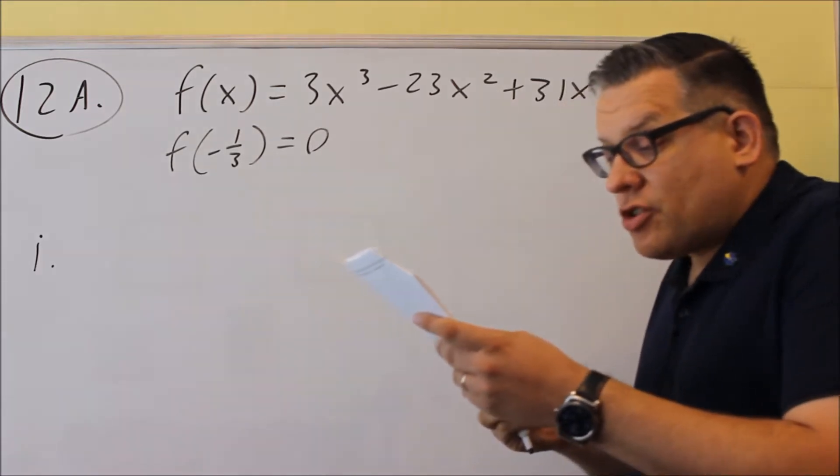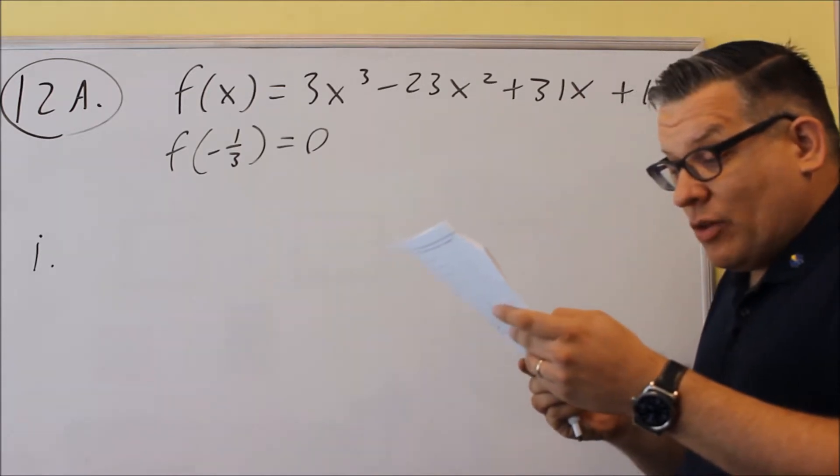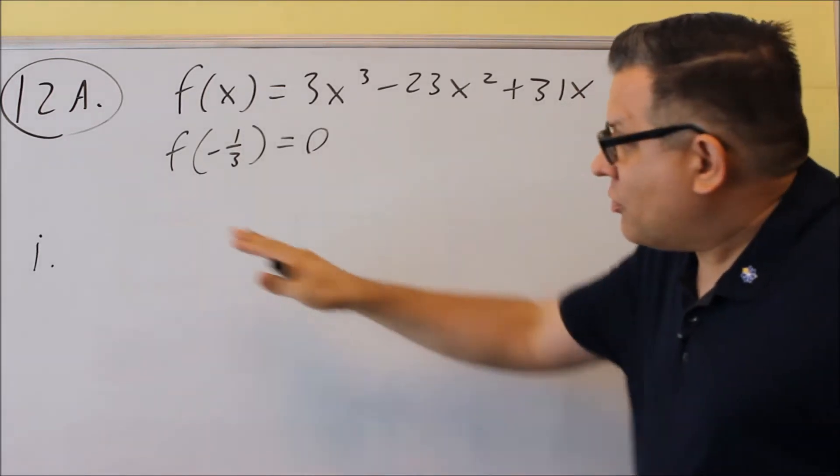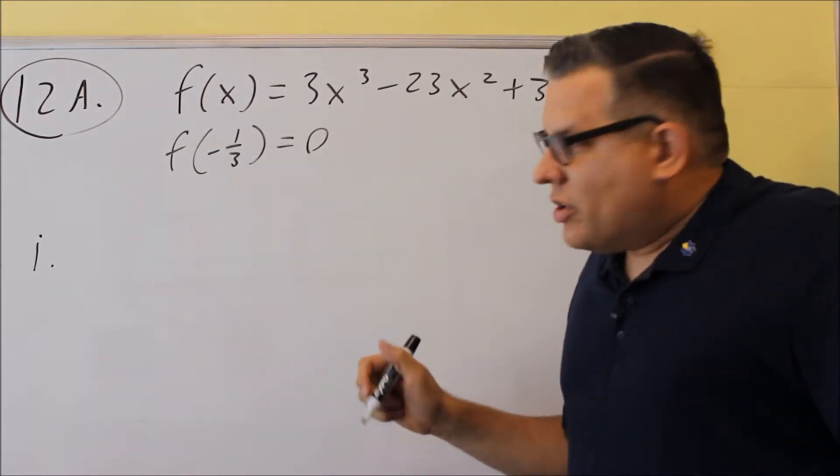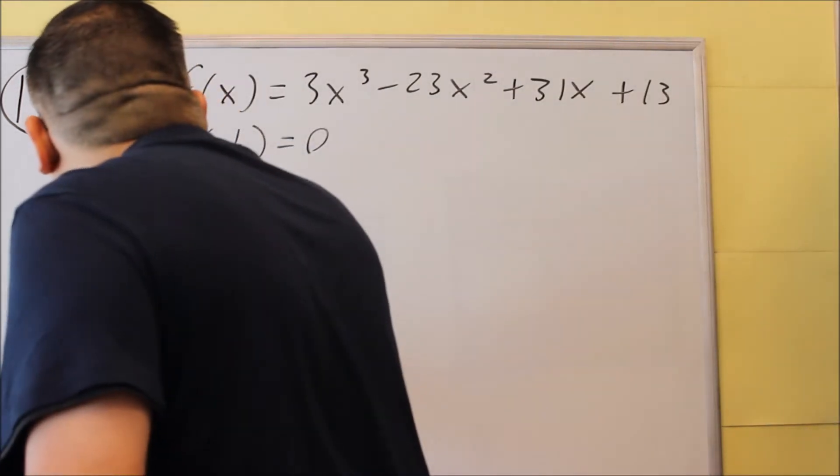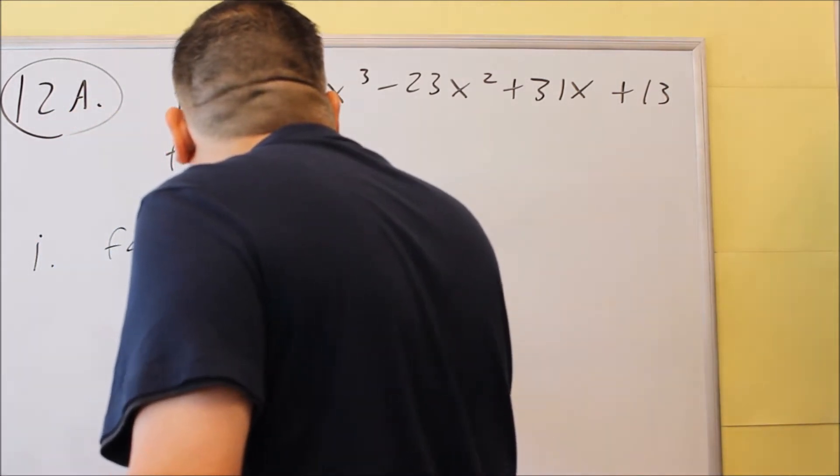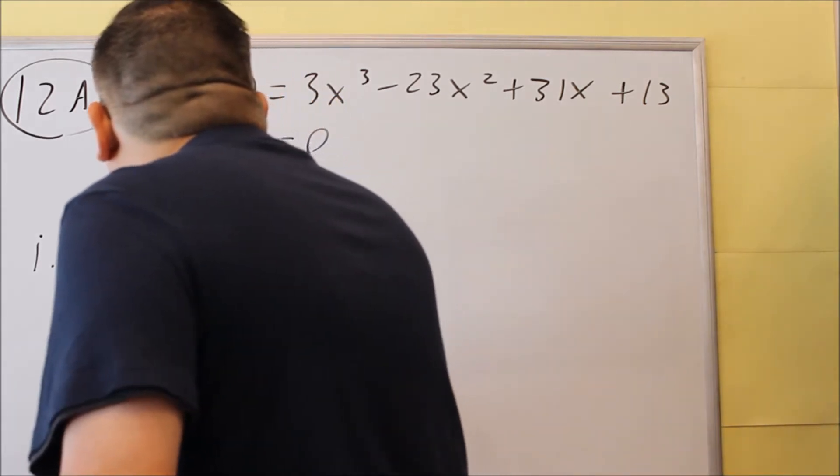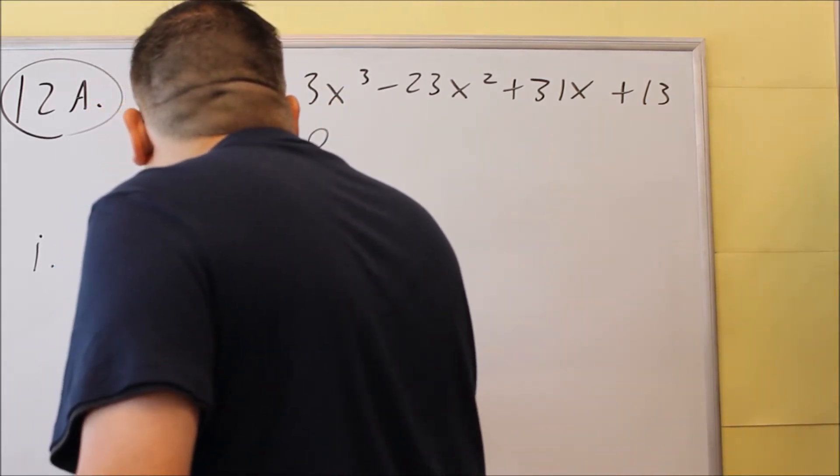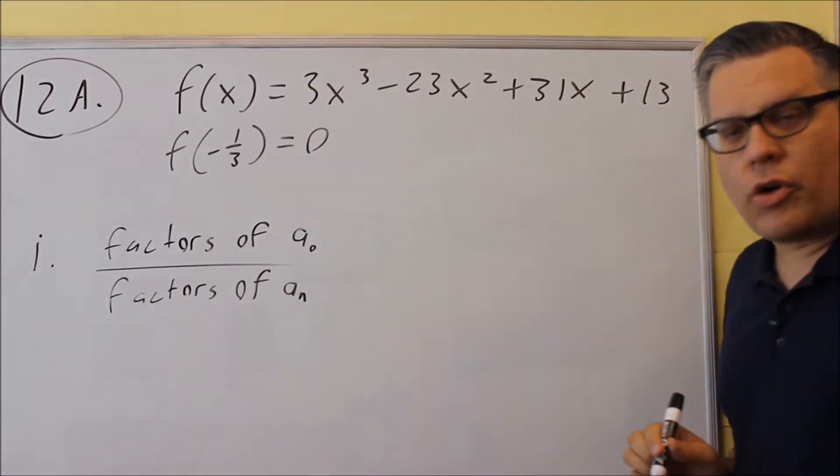It says use the rational zero theorem to find the list of possible zeros, and they want you to list the possible zeros and make a list. So to do that, we need to use a formula, and the formula is factors of a sub zero over factors of a sub n. Okay, so this is the main formula that we're going to use.